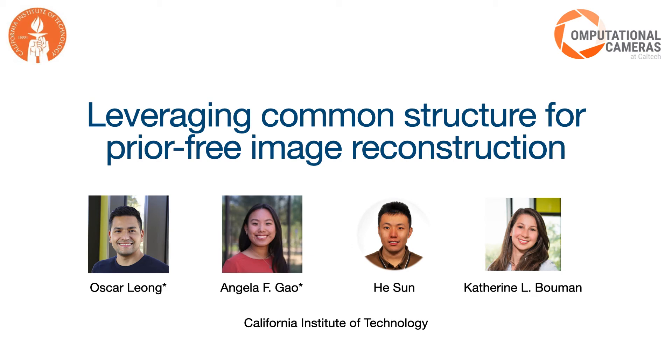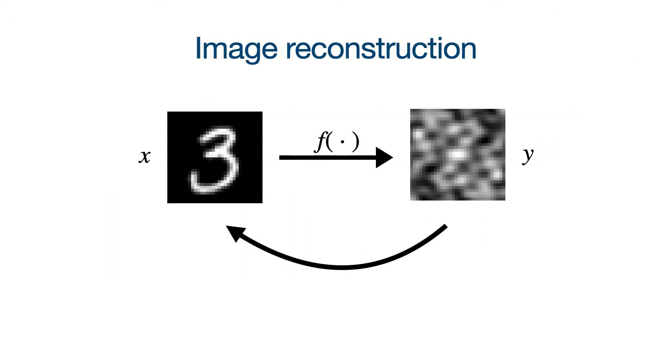In this work, we present a method to leverage common structure for prior-free image reconstruction. In image reconstruction problems, the goal is to recover a ground truth clean image, which we call x, from a noisy corrupted version of it, y. Here x is degraded via some known forward model f.